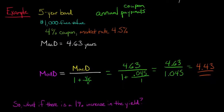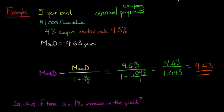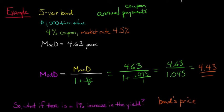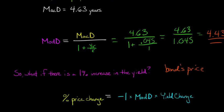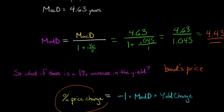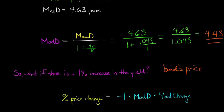What if there is a 1% increase in the yield? What is going to happen to this bond's price? That's why we're doing this. When we're talking about modified duration, we're talking about how sensitive the price of the bond is to a change in the yield. So let's say the yield goes up 1%. How can we use this number to tell us something about that? We've got another useful formula, this one's a lot less complicated.